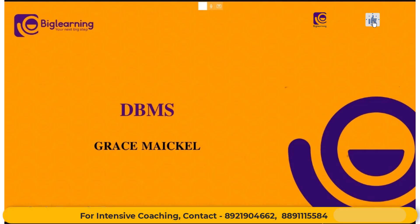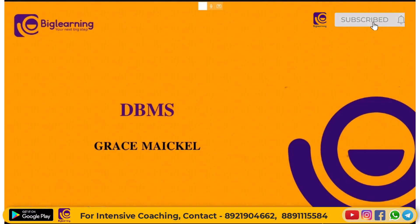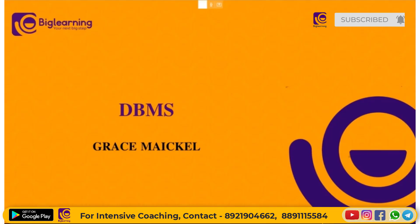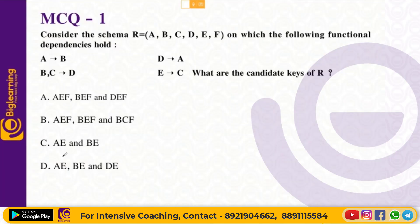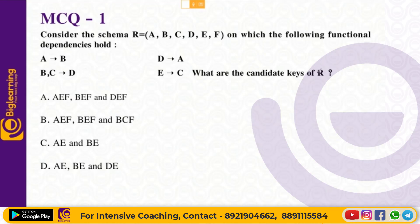UGC NET exam day database: discussion of previous year questions. First question — consider the schema R = {A, B, C, D, E, F} on which the following functional dependencies hold: A→B, B→A, BC→D, E→C. What are the candidate keys of R?